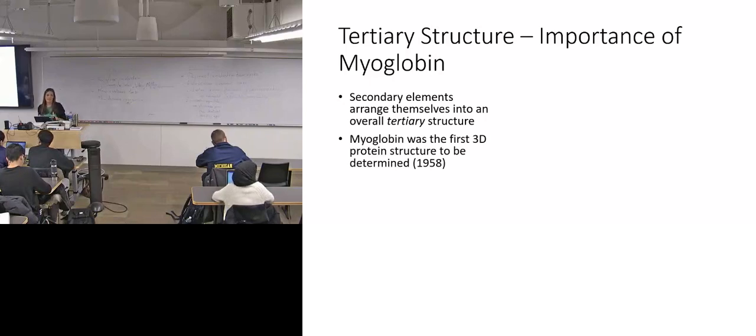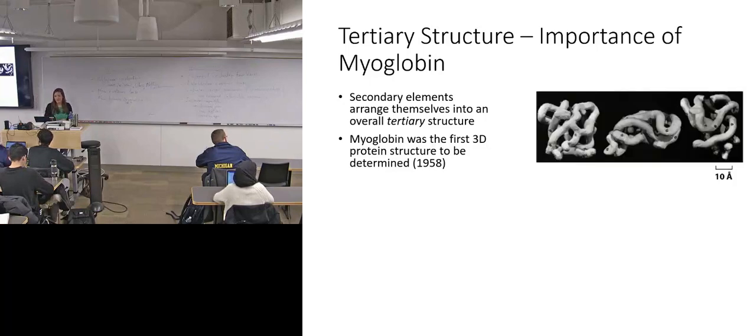So myoglobin was the first 3D protein structure to be determined in 1958. This is a few years after DNA was described by Watson and Crick. And they were really sad. Here's the clay model that they actually made of myoglobin. They were really sad that it was not neat and nice, and they really wanted it to be just like DNA-RNA. And when it wasn't, they were like, oh, so much more work for us. That was myoglobin.